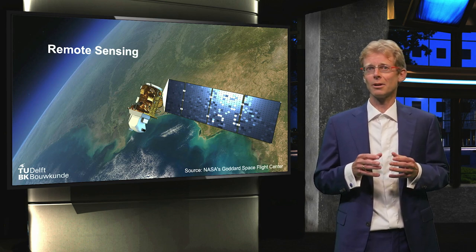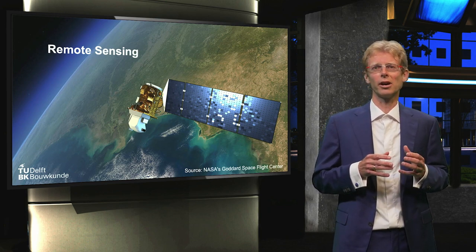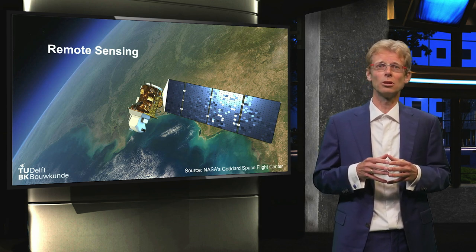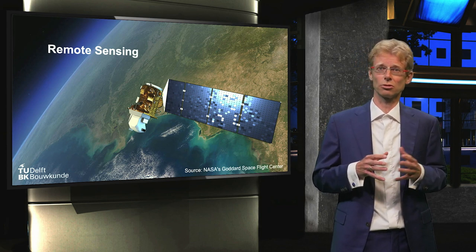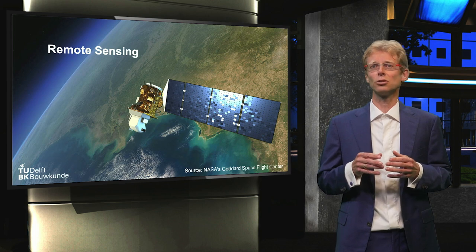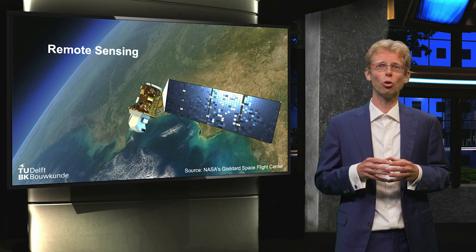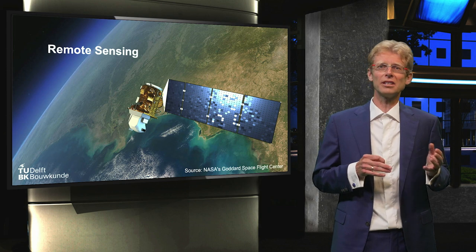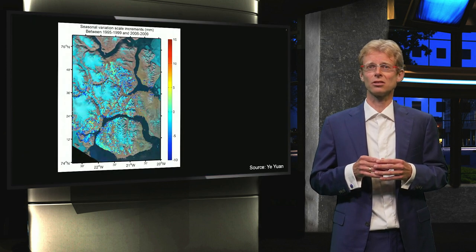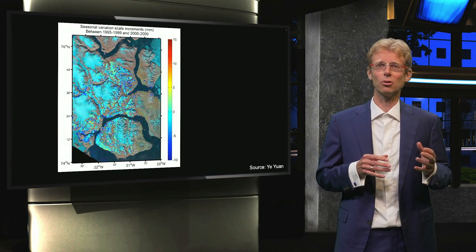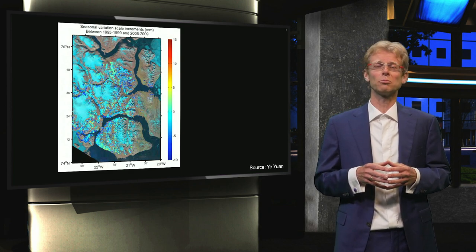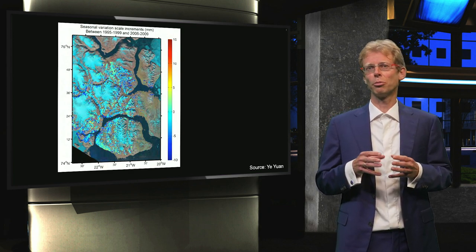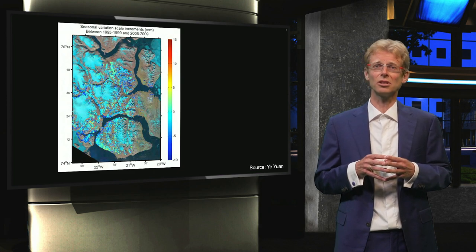Geomatics is also about data acquisition — acquiring data from the built environment via, for example, remote sensing satellites or drones. This data is used to detect and classify objects in the built environment. With this data we can also identify changes in the natural environment. For example, a few years ago one of our students measured the melting of ice in the Arctic by comparing remote sensing data from different years.